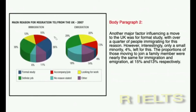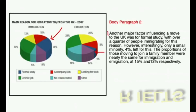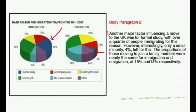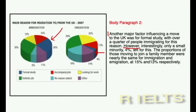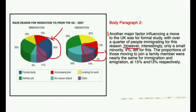In the second body paragraph, study is discussed first. Another major factor influencing a move to the UK was for formal study, with over a quarter of people immigrating for this reason. However, interestingly, only a small minority — 4% — left for this reason when emigrating. 'However' is used to make the comparison. This is definitely a difference that you should not miss when you write your graph, because there's a very big difference between these two figures and the examiner would definitely expect you to pick up on that. Then, accompanying or joining families is discussed next.